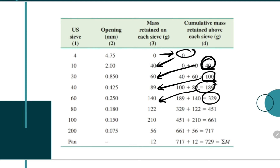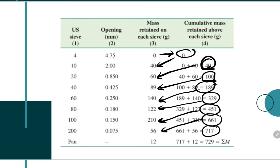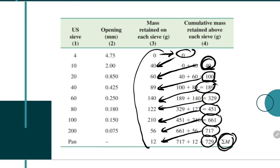189 plus 140, you get 329. 329 plus 122, you get 451. 451 plus 210, you get 661. 661 plus 56, you'll get 717. And last, 717 plus 12, you'll get 729. Take note that the last cumulative mass will also be the summation or the total mass. Try to get the summation: 0 plus 40 plus 60 plus 89 plus 140 plus 122 plus 210 plus 56 plus 12 — you'll also get 729.